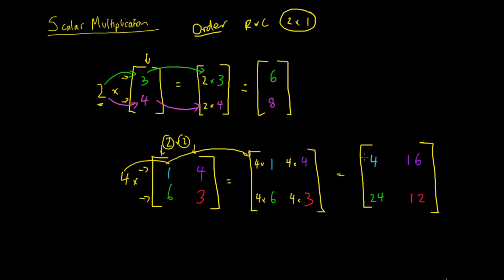So 4 times 1 is 4, 4 times 4 is 16, 4 times 6 is 24, 4 times 3 is 12. That's how we complete a scalar multiplication. Just remember that all you do is multiply the terms inside by the quantity on the outside, so everything gets scaled up by whatever is on the outside — in our bottom matrix it was 4 and in our top matrix it was 2. I'll put some examples out for you guys to have a go. Thanks guys.